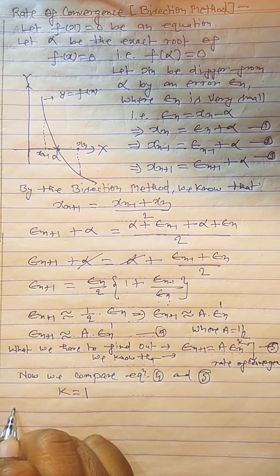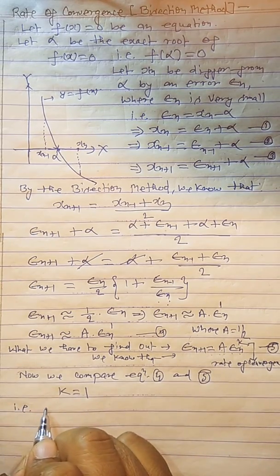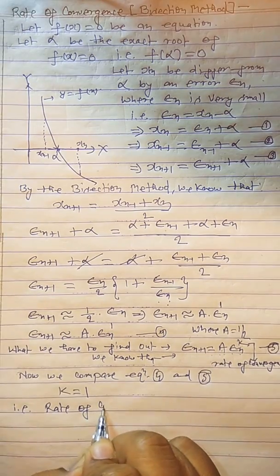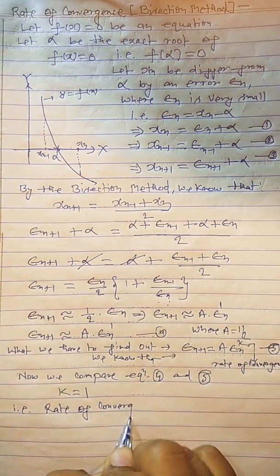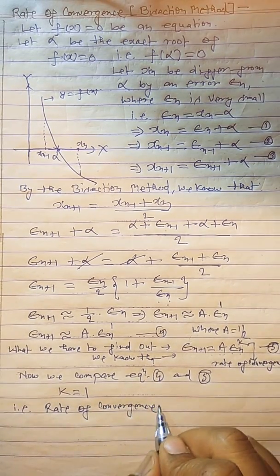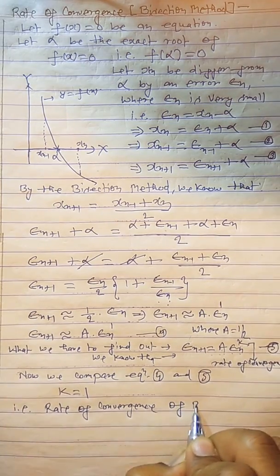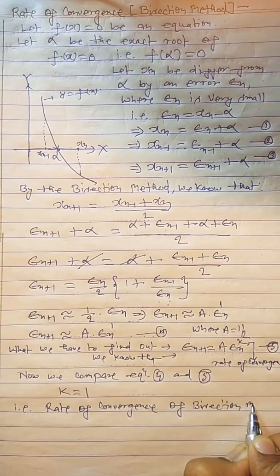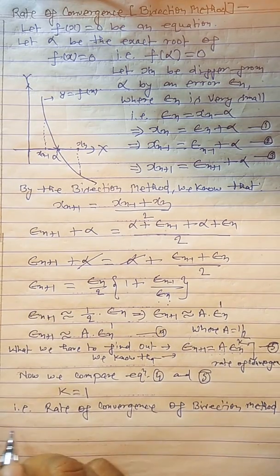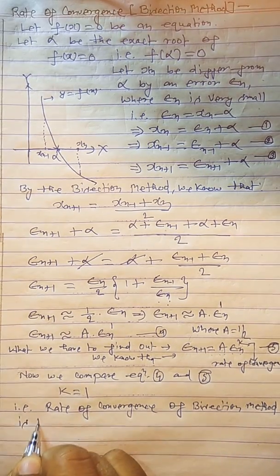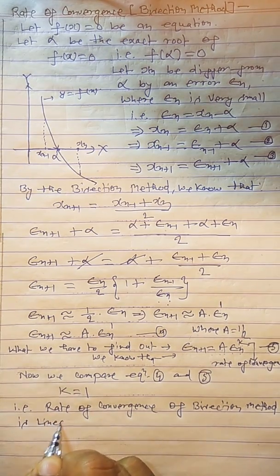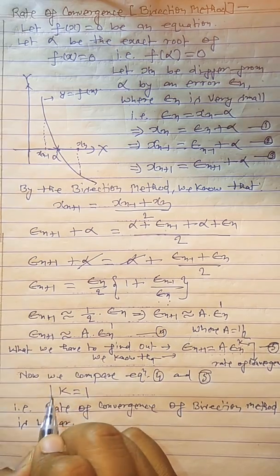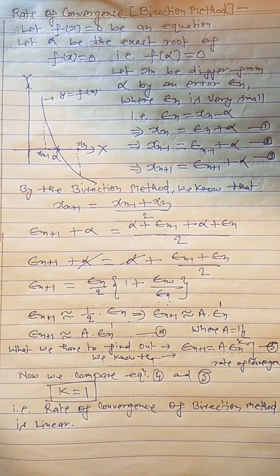That is, here we can say that the rate of convergence of the bisection method is linear. The value of k, the rate of convergence, is 1.